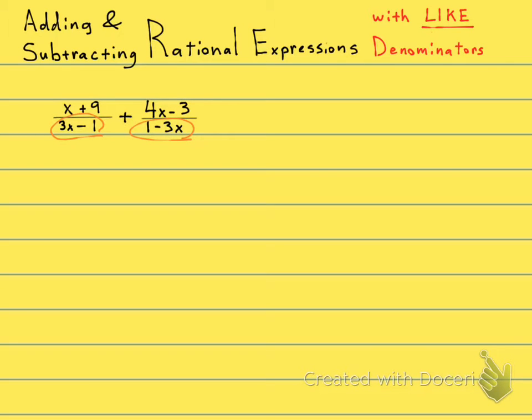Now these two denominators are not exactly the same, are they? It's under the section of like denominators, but they're not exactly the same. What they really are is similar. So they both have a 3x and they both have a 1, but they're not exactly the same. And I'm going to show you what we do in that case.